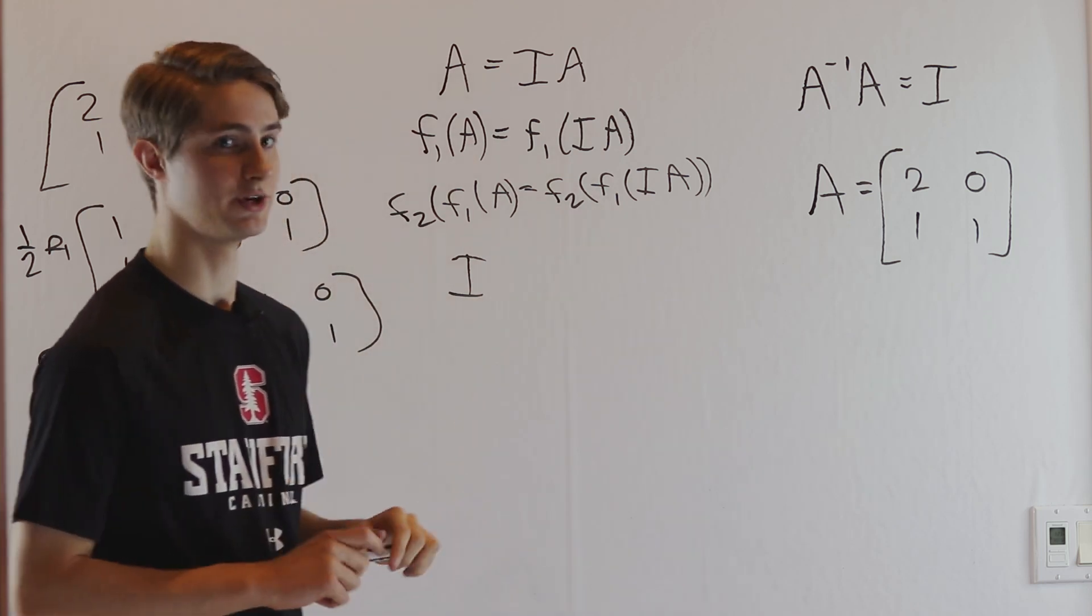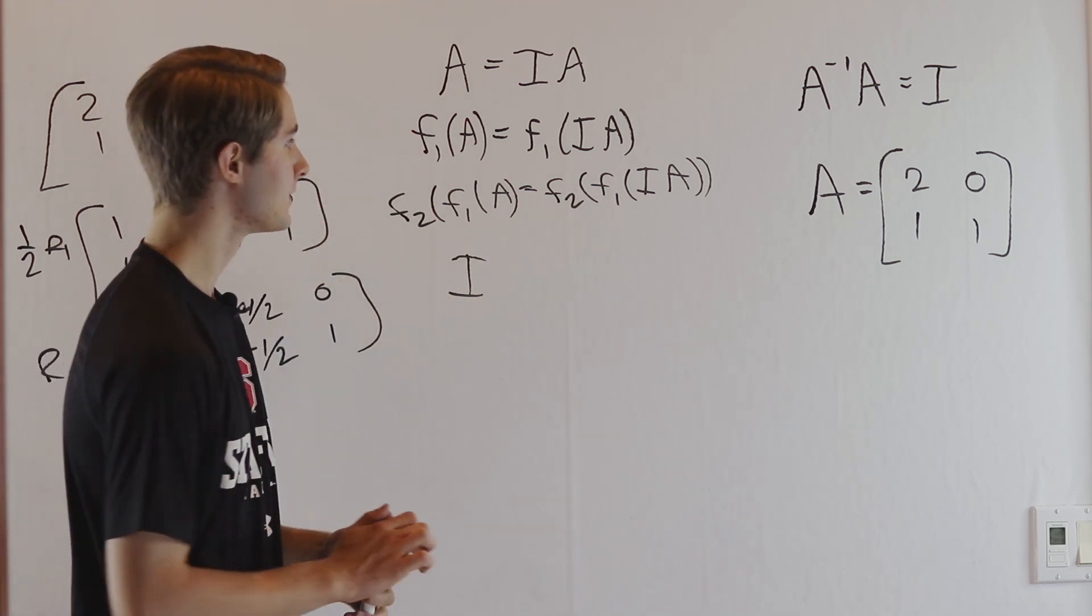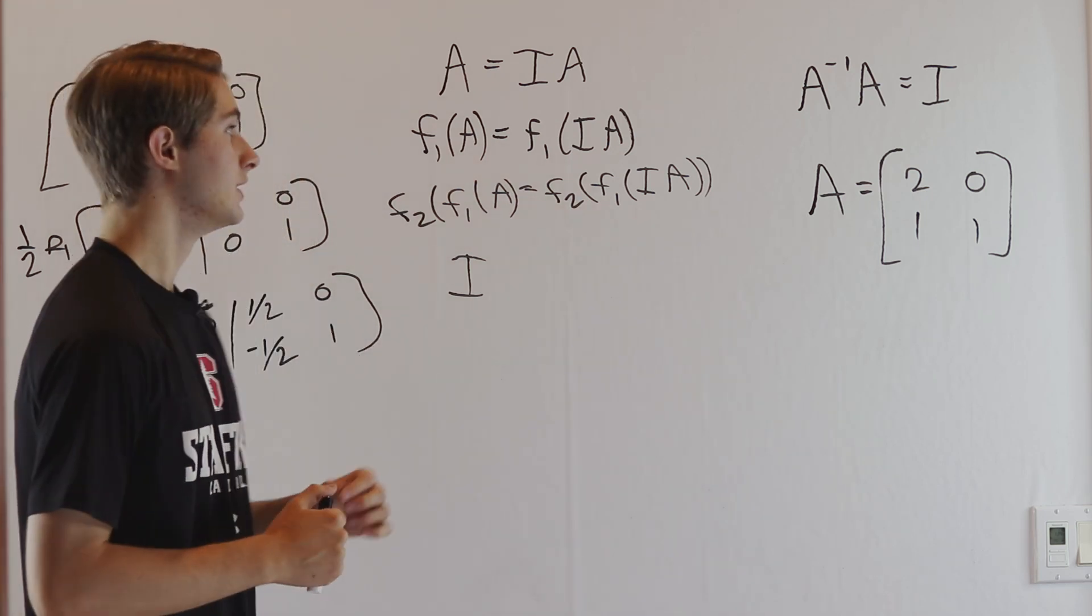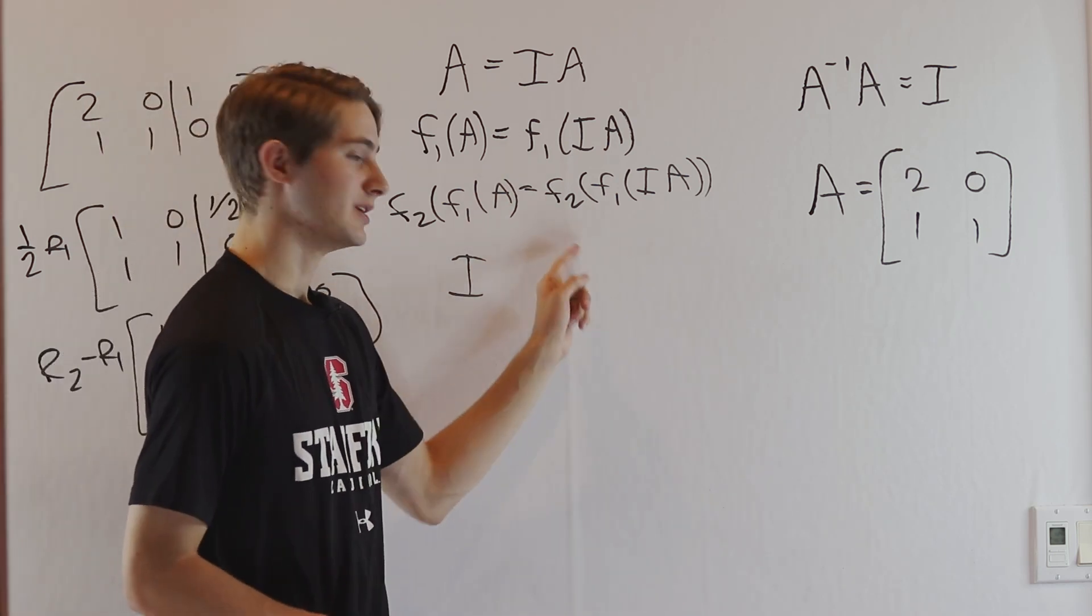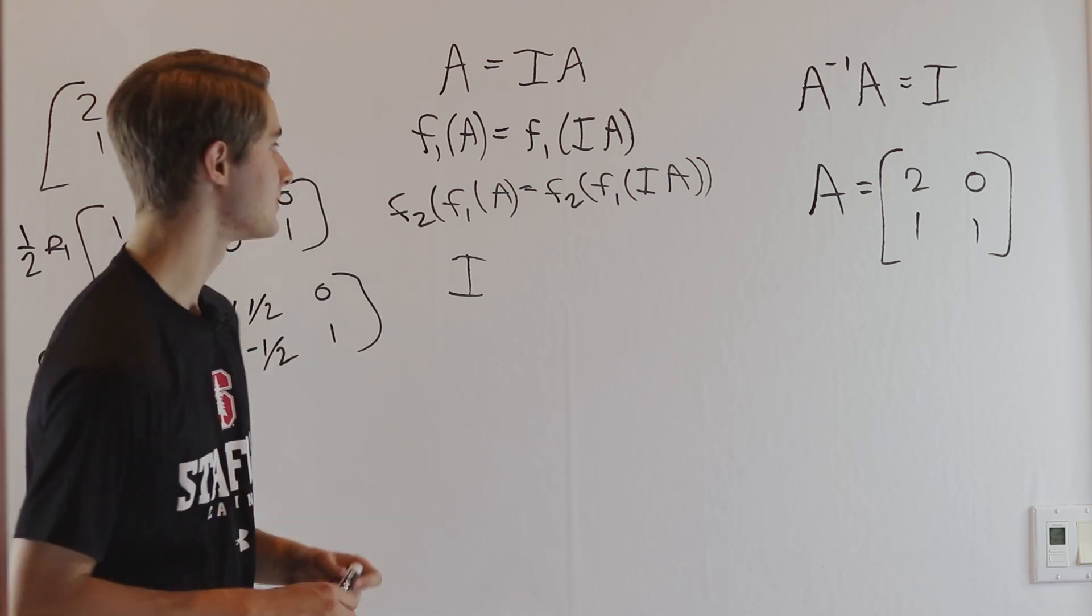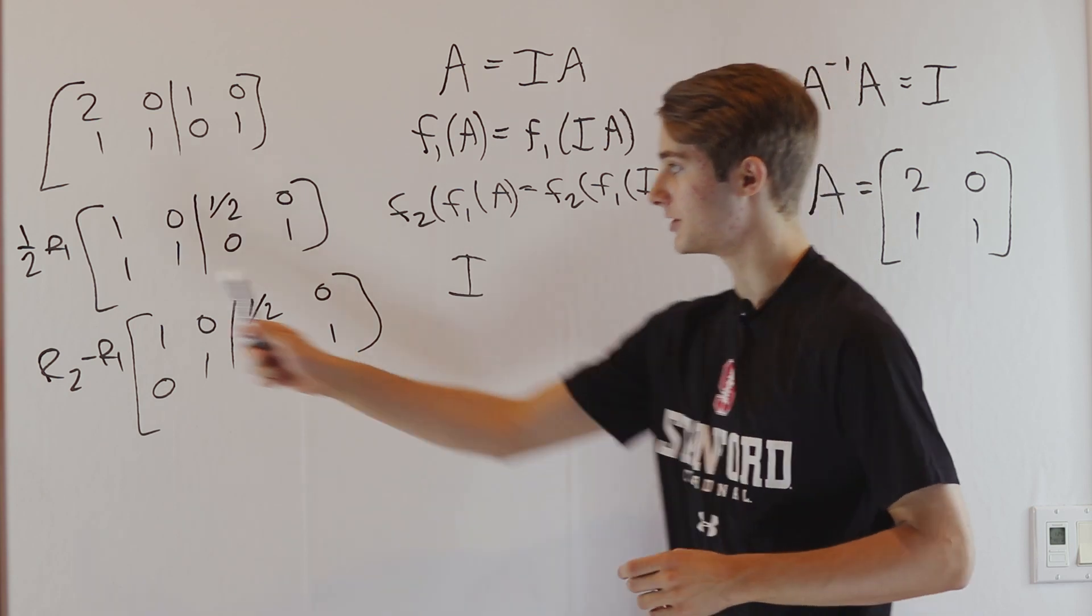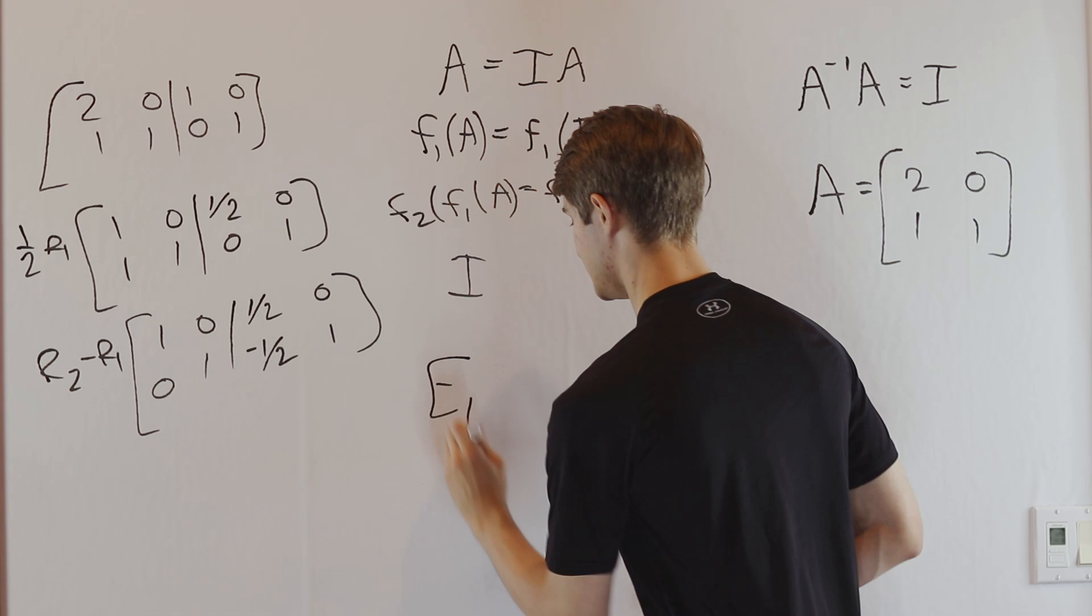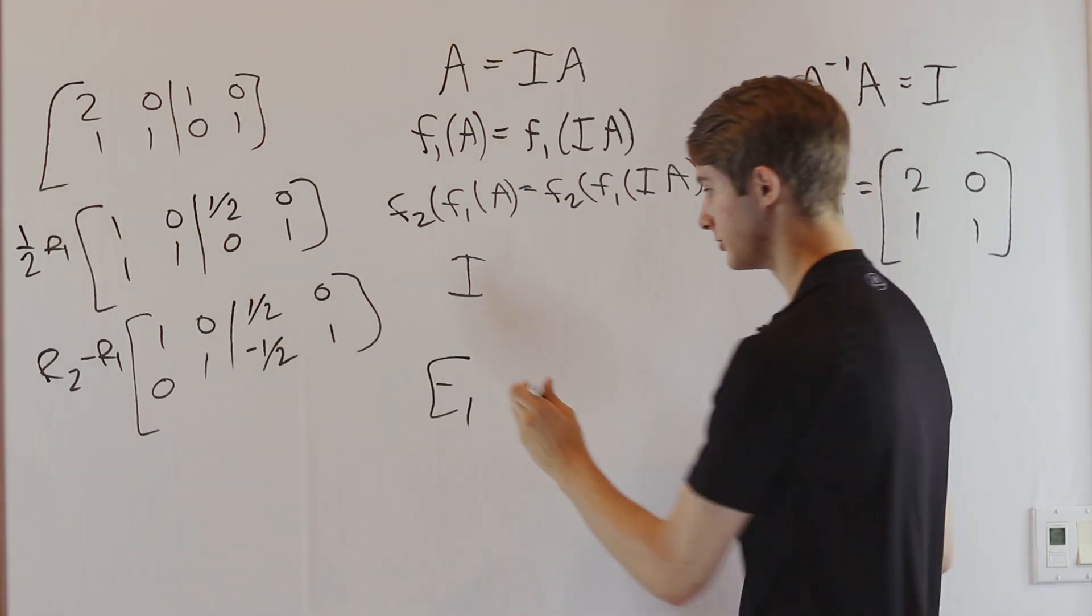Let's look at the right side of the equation. This is where elementary matrices come into play. Each function corresponds to an elementary row operation. We know from our work on elementary matrices that every row operation has a corresponding elementary matrix with the same effect. F₁ is the row operation (1/2)R₁. We can come up with an elementary matrix E₁ that has the same effect as multiplying the first row by 1/2.